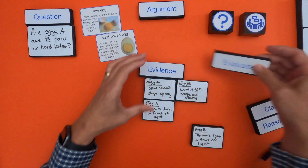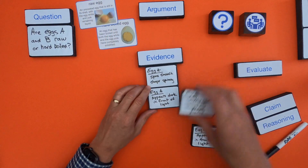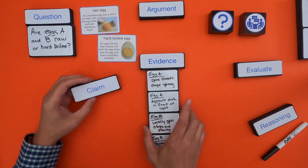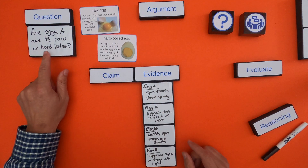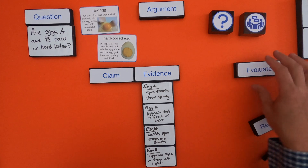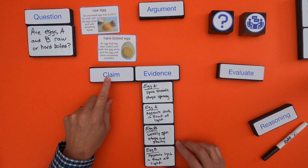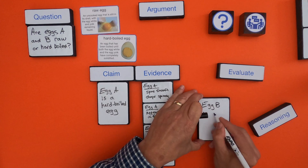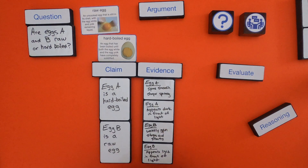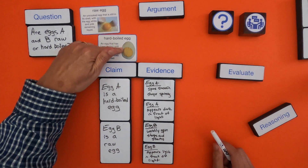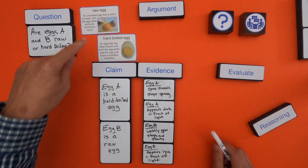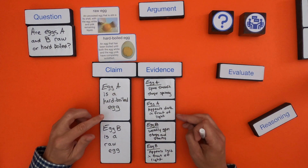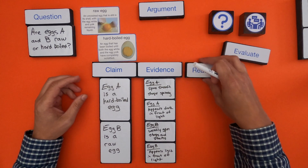I'll separate the evidence for egg A and egg B. I think I'm ready to make a claim. A claim is simply an answer to the question. Based on the evidence gathered and evaluated, you just answer the question. My claim is: egg A is a hard-boiled egg — it looks solid on the inside. And egg B is a raw egg — it has liquid on the inside. A claim is just an answer to the question, and this evidence goes with this claim.